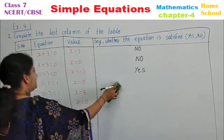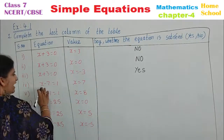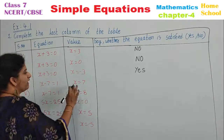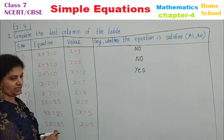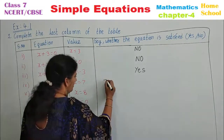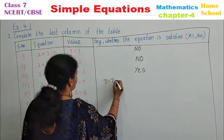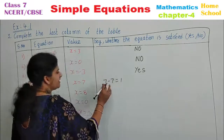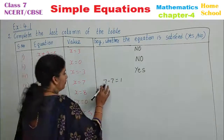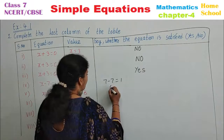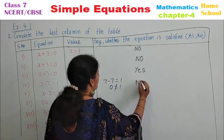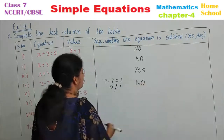Fourth one: x minus 7 equals 1, with x equal to 7. Substitute 7: 7 minus 7 equals 0, and 0 is not equal to 1. Therefore, write no.